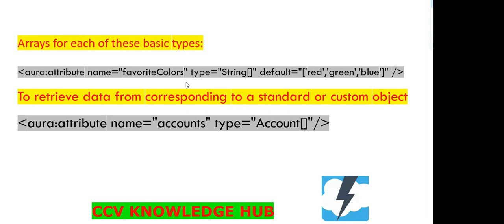If you want to define arrays, the syntax is: aura:attribute name equal to 'favoriteColors', type equal to String with array brackets. The default value can be a set of values such as red, green, blue. Multiple values can be stored in this particular string type array.